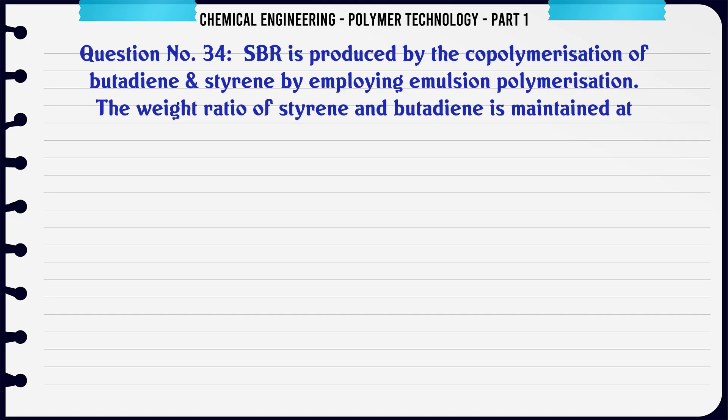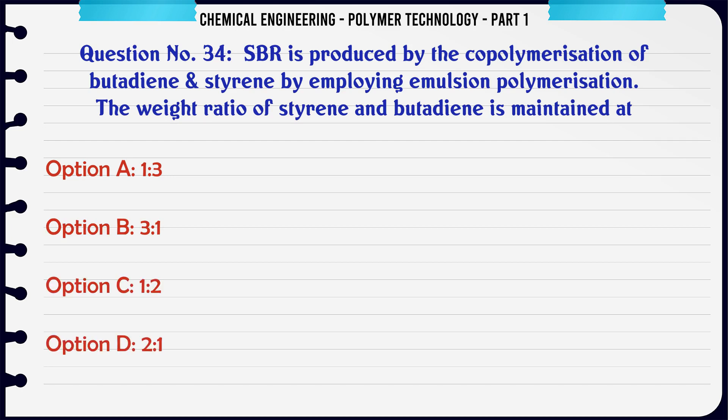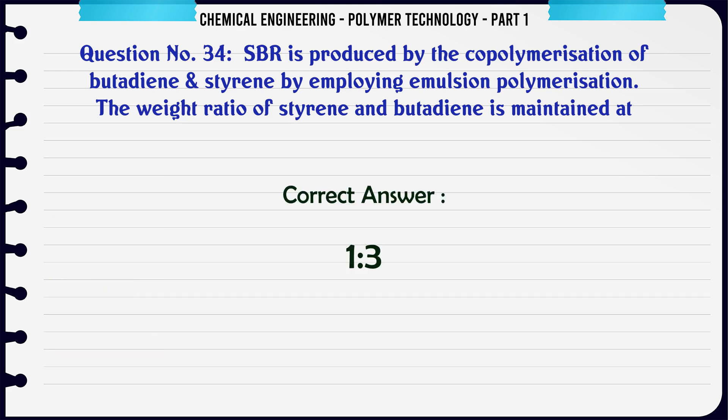SBR is produced by the copolymerization of butadiene and styrene by employing emulsion polymerization. The weight ratio of styrene to butadiene is maintained at: A. 1:3, B. 3:1, C. 1:2, D. 2:1. The correct answer is 1:3.